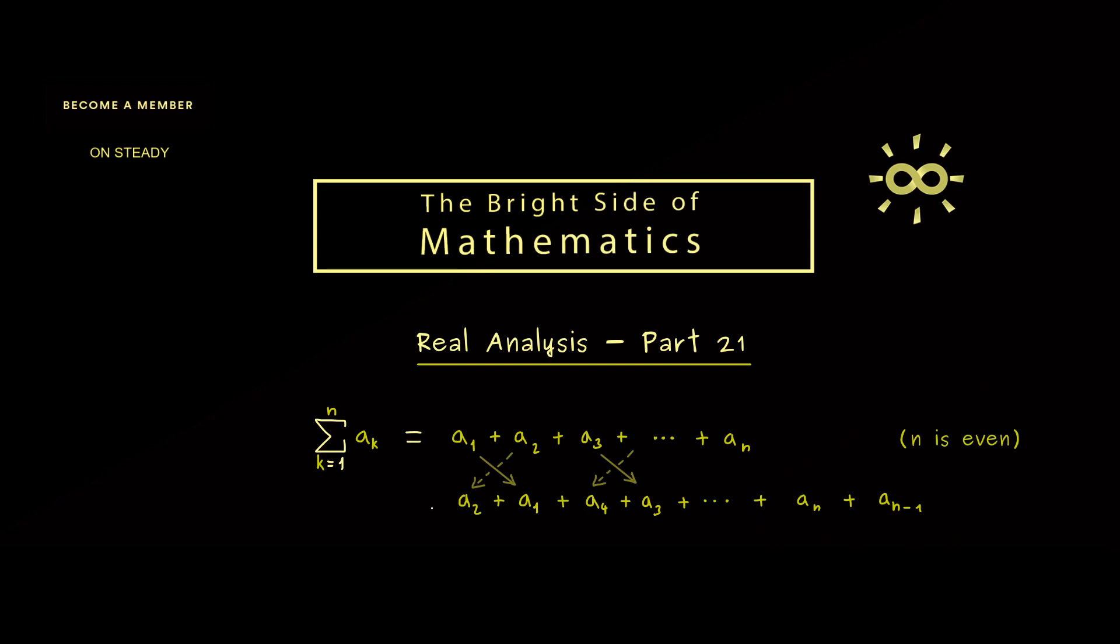Since you know all the calculation rules, you immediately know this is the same sum. We don't change the result of the sum when we just reorder the terms. However, you already know an infinite sum, a series, is different from a finite sum.